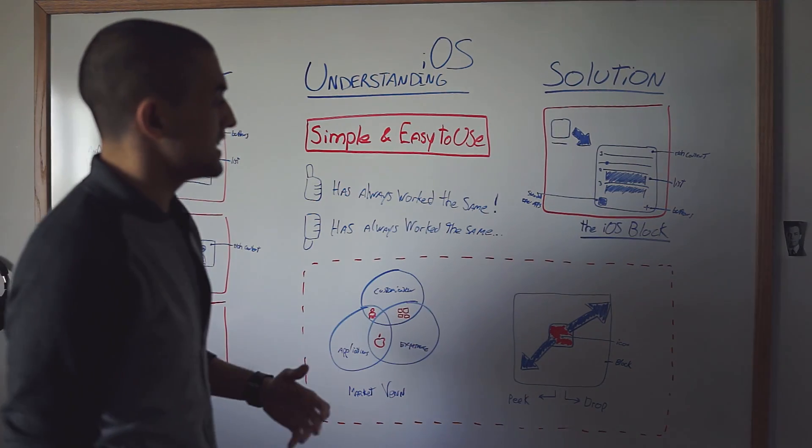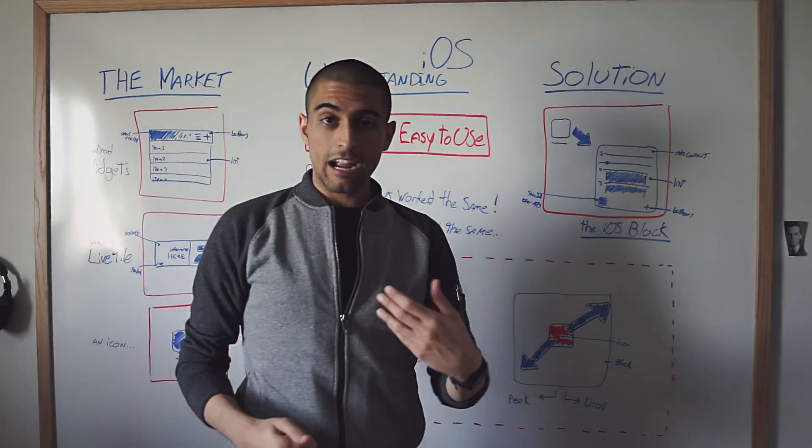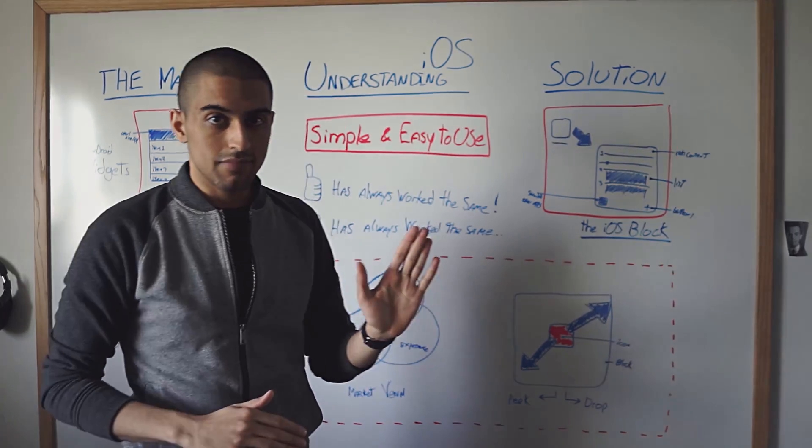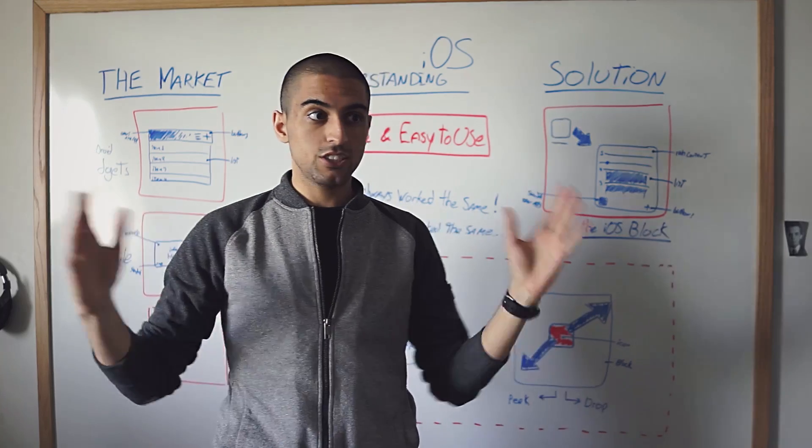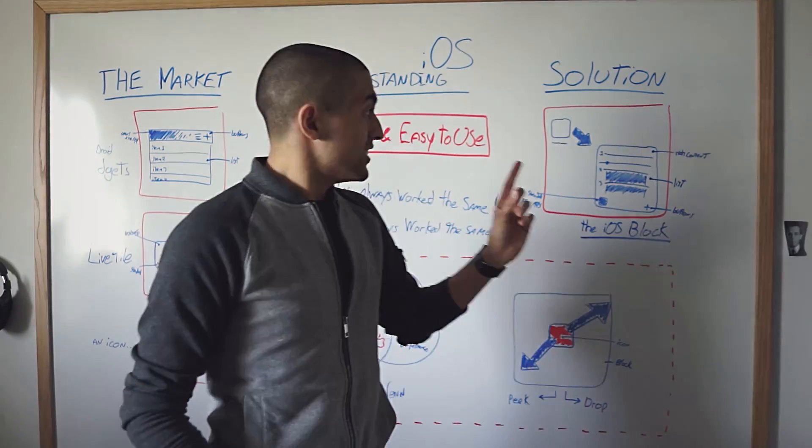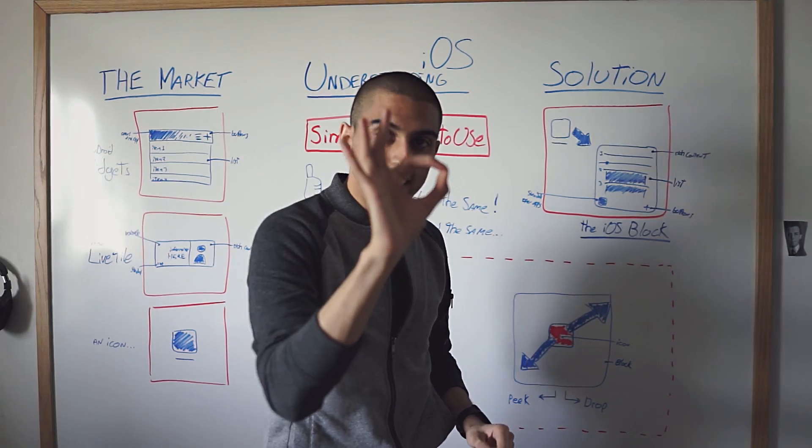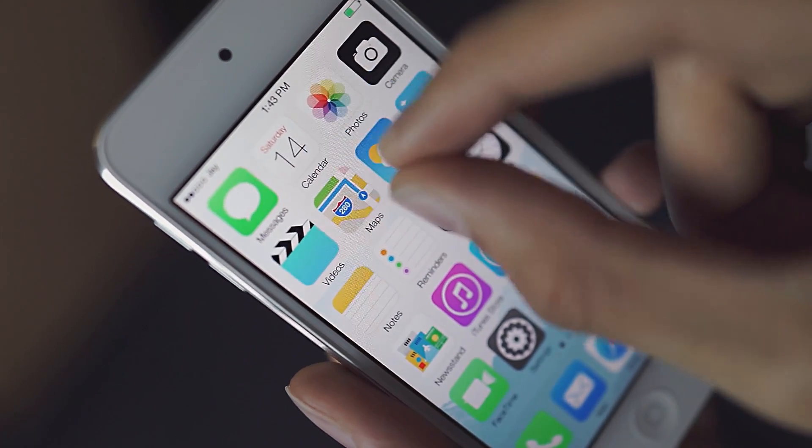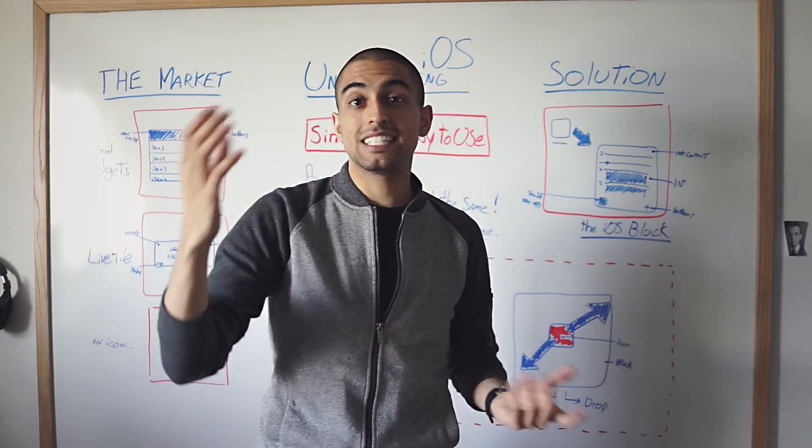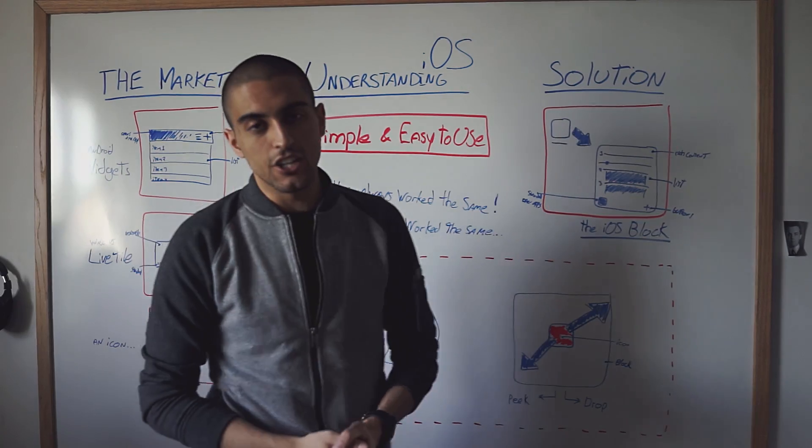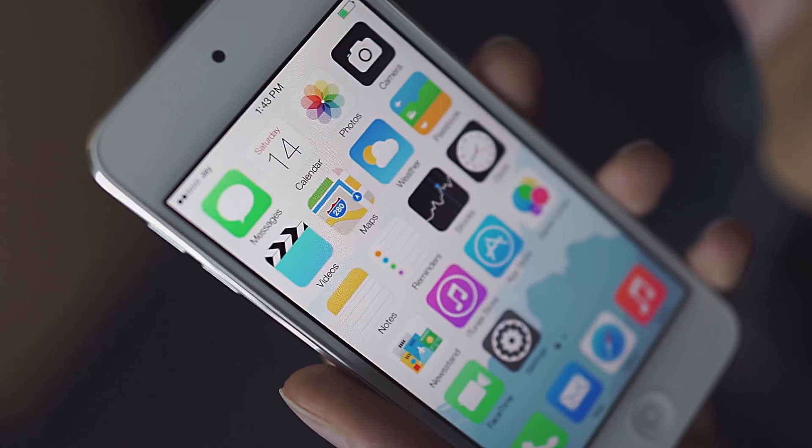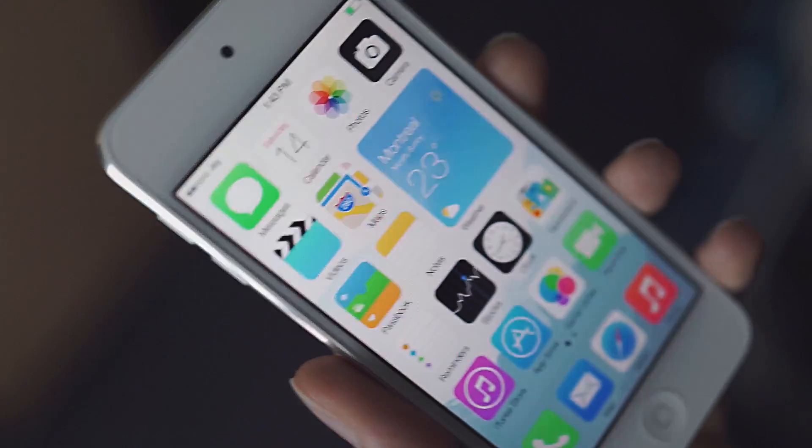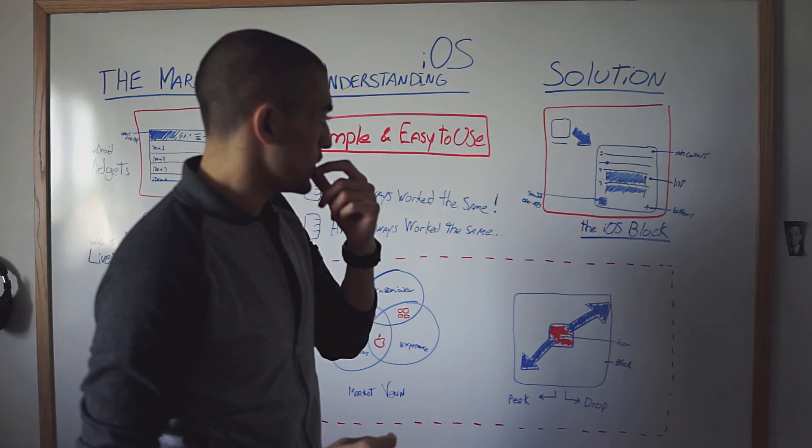So, the solution, I think, would be something called an iOS block. A block would be very simple. Your home screen stays the same. It's just a bunch of icons like you've always used on iOS and you've always loved. The difference is that you can just take the icon, pinch it bigger, and you can have more information. If you pinch it back down, you're just basically peaking. So, that's kind of a peak scenario. Yet, if you open the application and you leave it, it basically drops. It stays in iOS block.